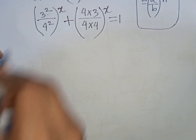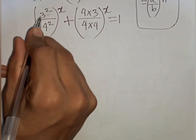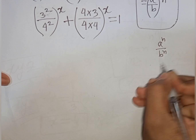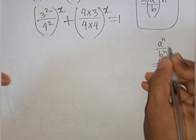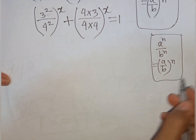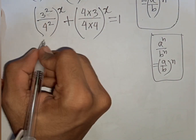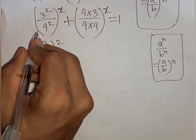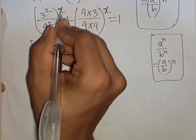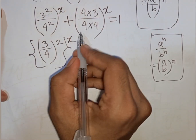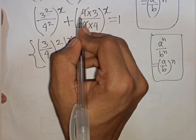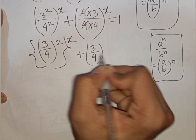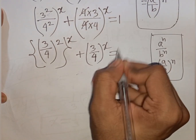We see the same power but different bases. Remember the exponential rule: a^n over b^n equals (a/b)^n. So we can write (3/4)^2 raised to the power x, plus the 4s cancel, giving (3/4)^x, and the whole expression equals 1.